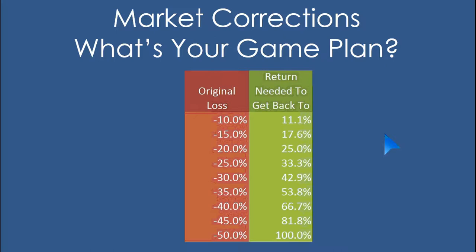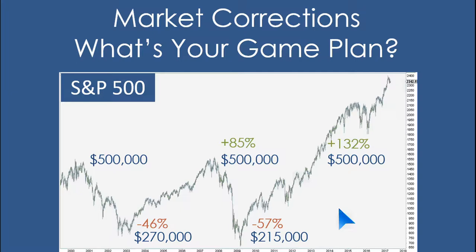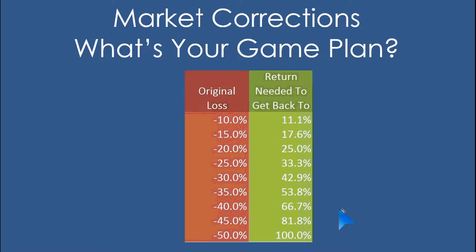One of the key reasons to protect from larger losses: losing 50% takes a 100% return just to get it back. We live in an environment where financial media is not helpful for decisions, P/E ratios don't help with timing, and our own personal emotions work against us. So what do we do? For us and our clients, we use the Adaptive System — we focus on the signal and avoid the noise.